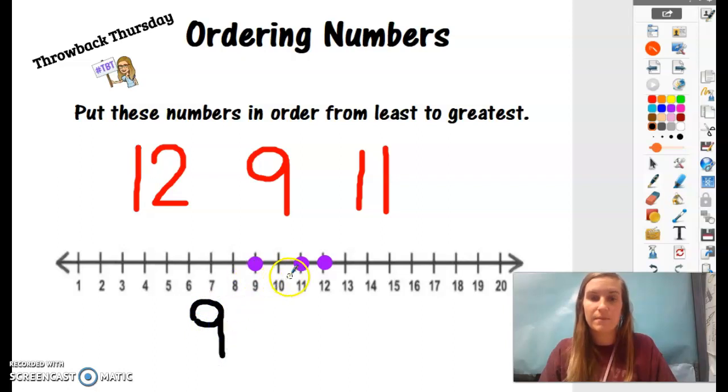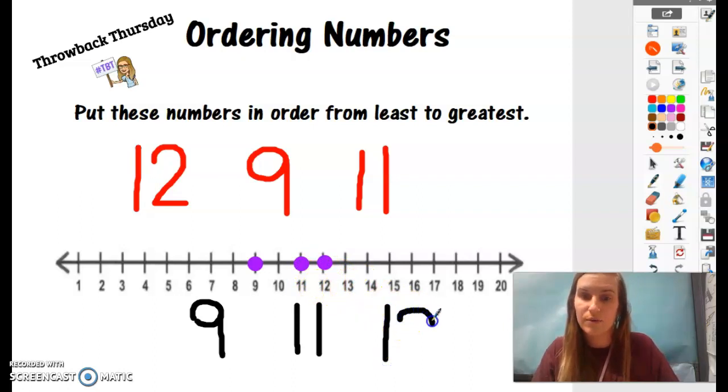All right, what number comes next? Number 11 comes after 9. That is our middle number. And then which number out of these 3 is the greatest? The number 12 is the greatest number. So we would put it on the right.